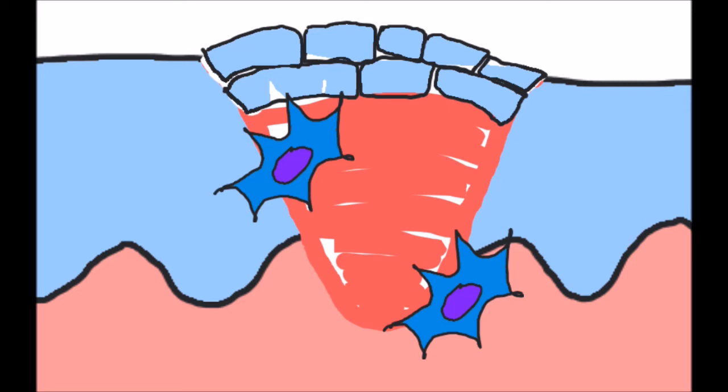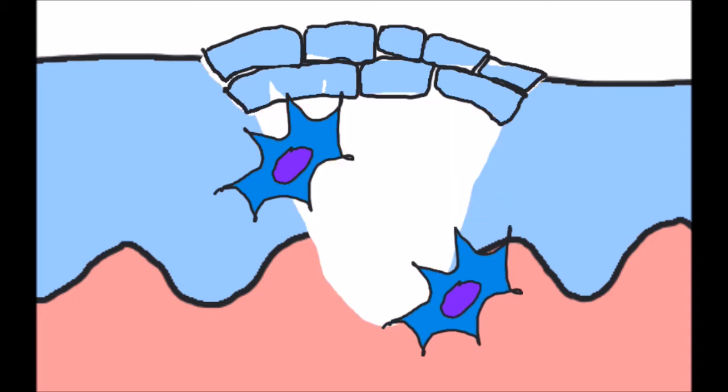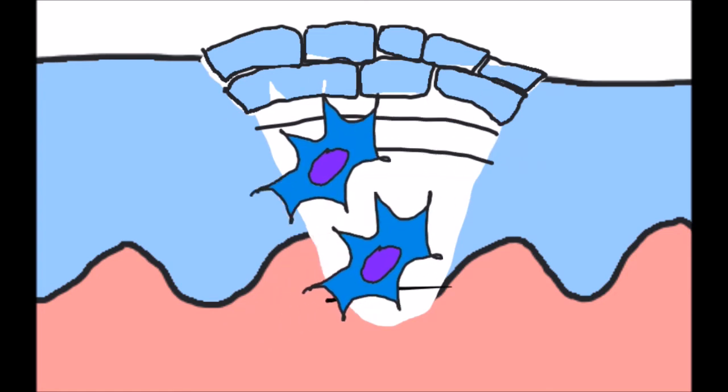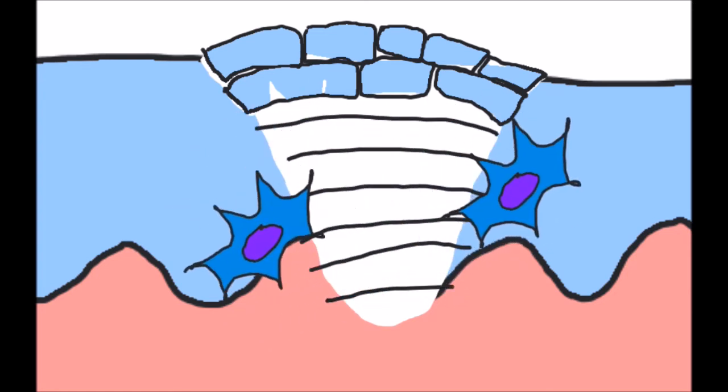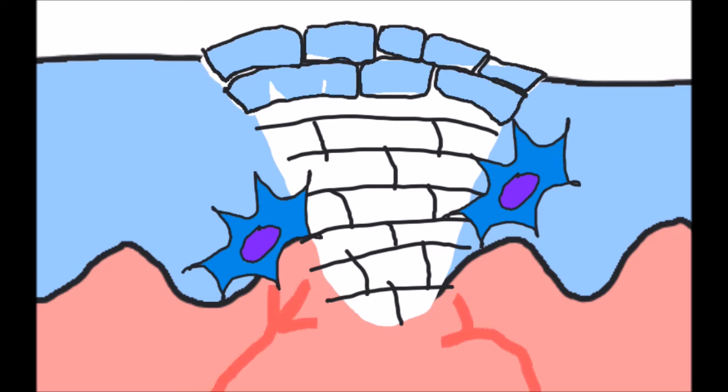Initially, they differentiate into fibroblasts and lay down a different type of collagen called scar tissue, which has parallel collagen fibers that are cross-linked to one another. To aid in the repair process, we might also grow new blood vessels into the area to bring in more nutrients. This process is called angiogenesis and would lead to the formation of a reddish scar.